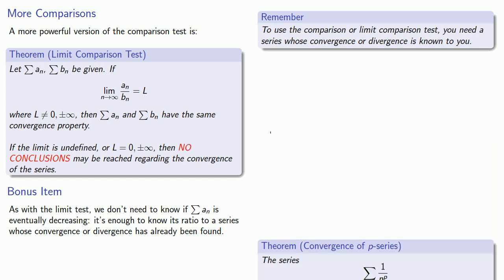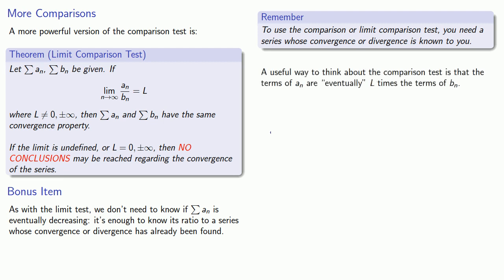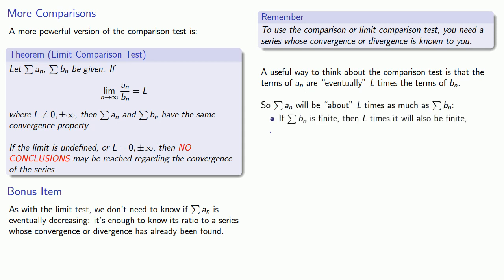A useful way to think about the limit comparison test is that the terms of our series a_n are eventually L times the terms of b_n. So the sum of a_n will be about L times the sum of b_n. If the sum of b_n is finite, then L times it will also be finite, while if the sum of b_n is infinite, then L times it will still be infinite.